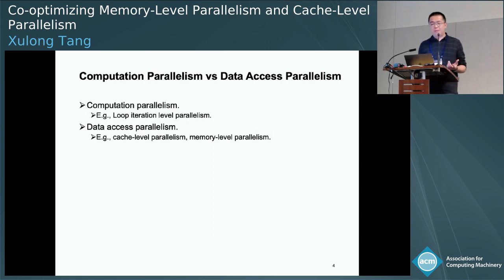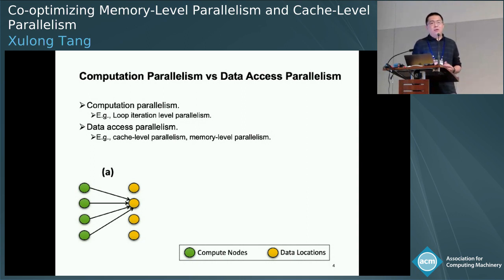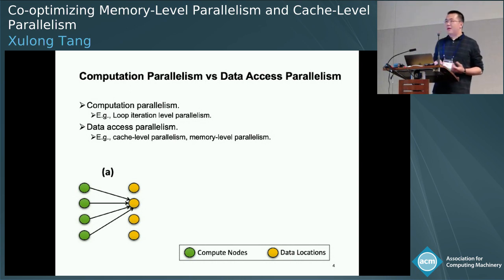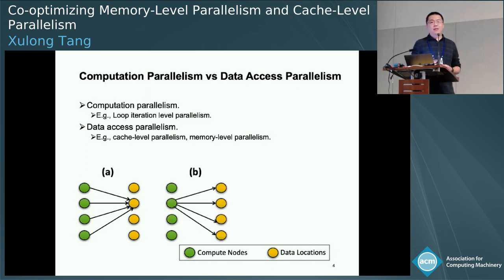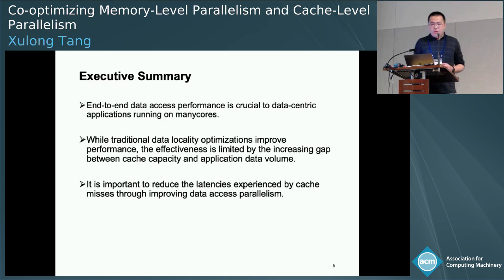One option is through a data access paradigm. We talk about the computation paradigm — for example, loop iteration level — where computation is balanced across different computation nodes and executed in parallel. The potential problem is that in a short period of execution, a significant number of requests may go to the same location, causing contention and extending the data access latency. On the other hand, the data access paradigm means requests go to different data locations in a short time period, so all those locations serve data to the computation in parallel. The ideal execution is computation parallelism plus data access parallelism.